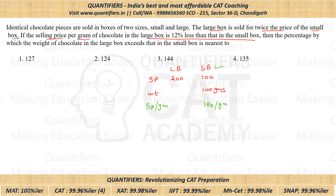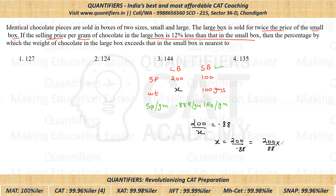So the selling price per gram for the large box would be 0.88 rupees per gram. Now if I solve it, I'll get X is equal to 200 divided by 0.88. So now if I divide it by 8, this comes out to be 25, and this comes out to be 11. So finally, 25 upon 11 multiplied by 100, which approximately comes out to be 227.27 grams.